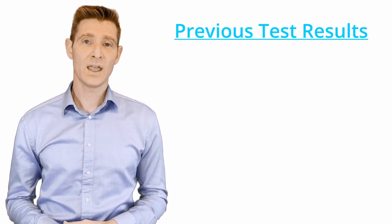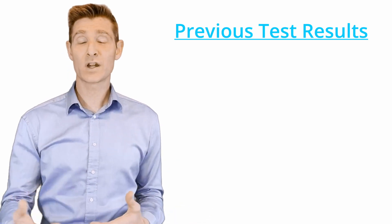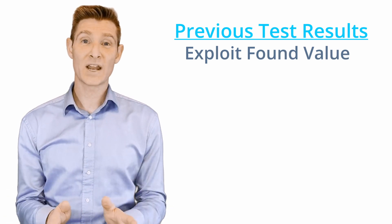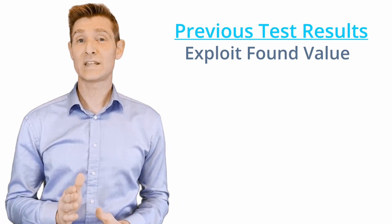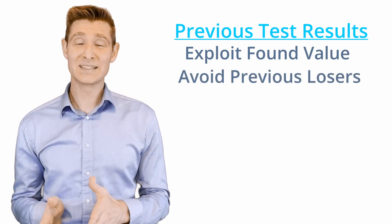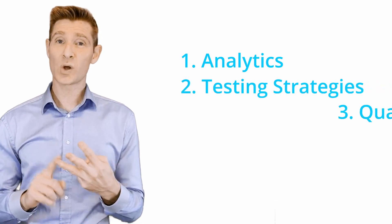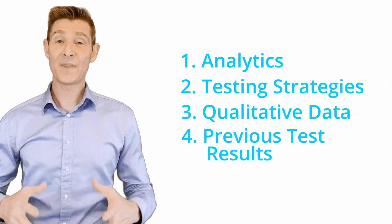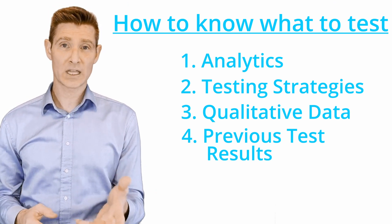The last thing to look at is previous test results. If previous tests on the site found value somewhere, you might suggest digging deeper and exploiting that value. Previous test results can be a huge way to figure out what to test and tap value that may have already been found. It also helps you know if something didn't work — if something was tested and it didn't work, don't test that again. So those are the four things: analytics, testing strategies, qualitative data, and previous test results — and that's the first category.